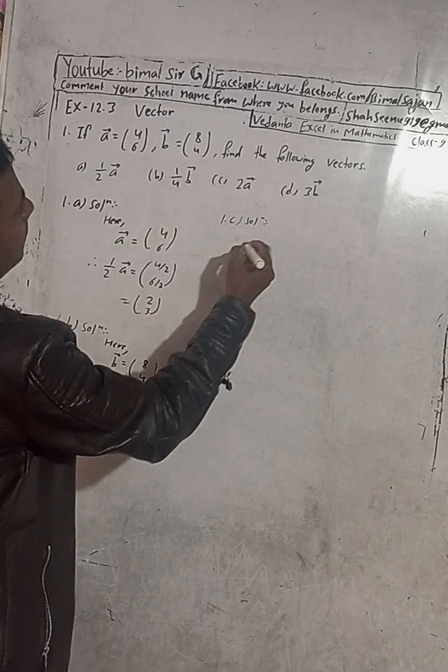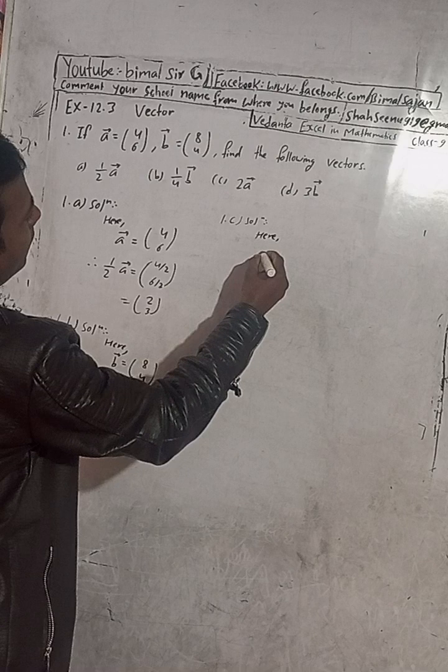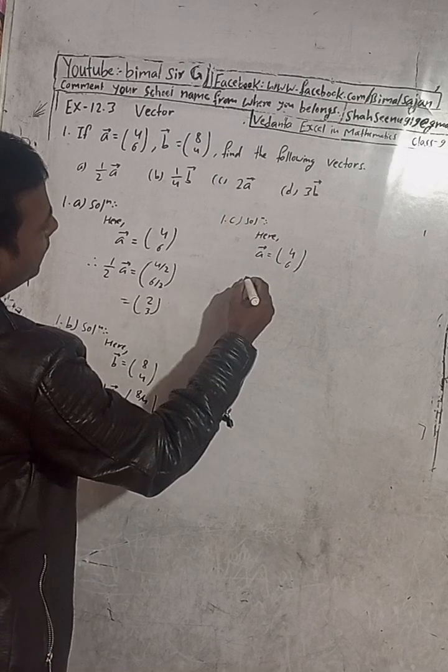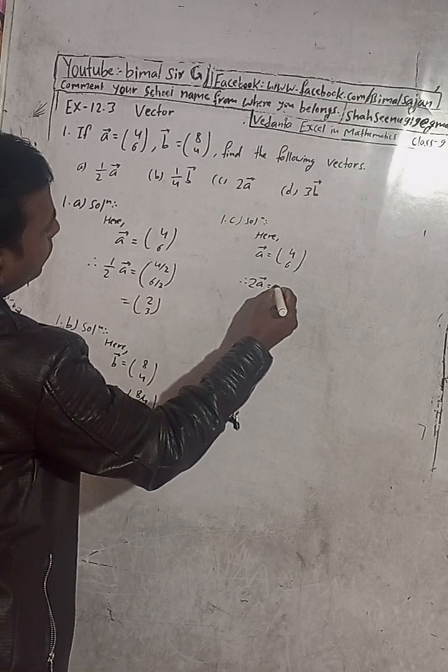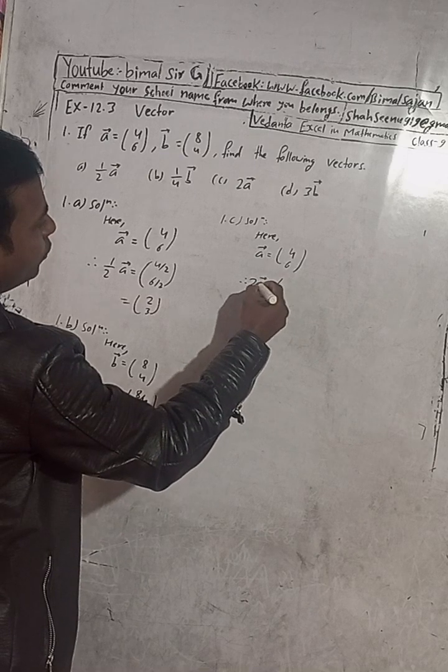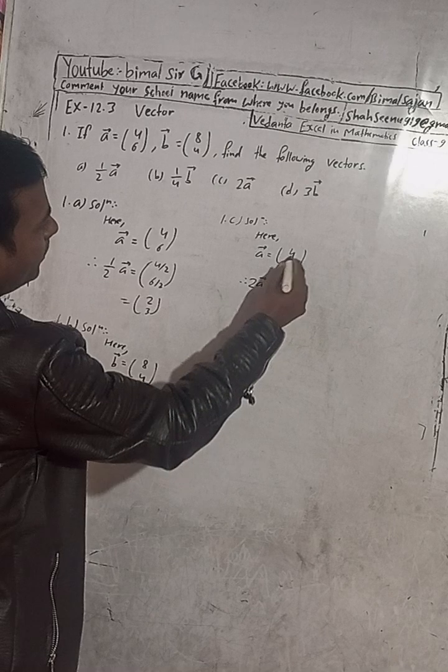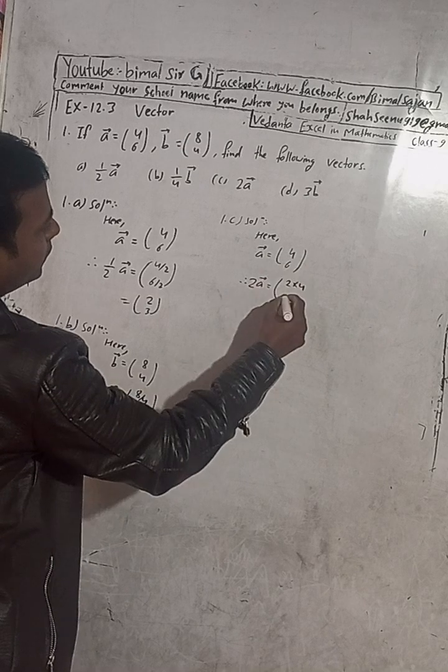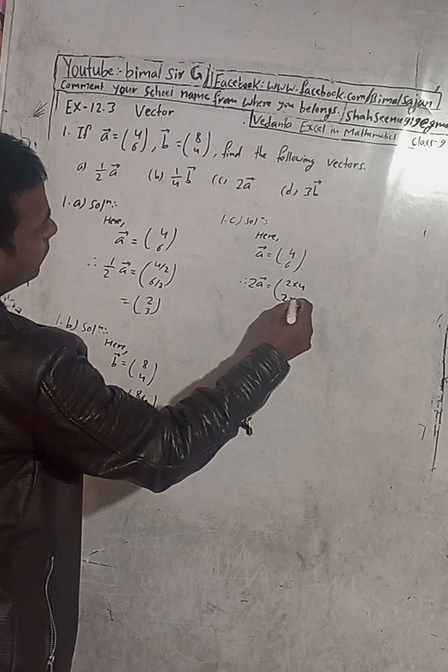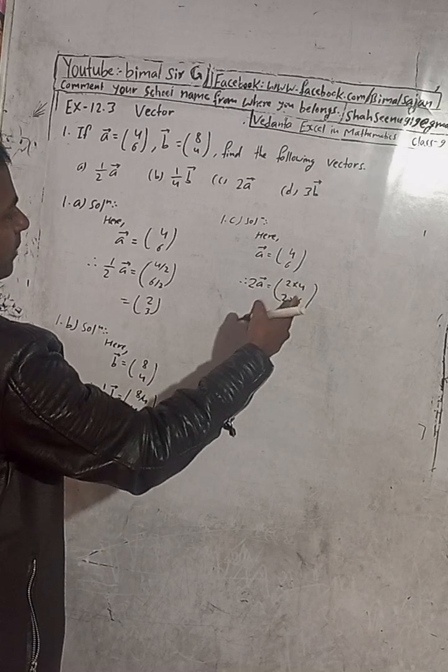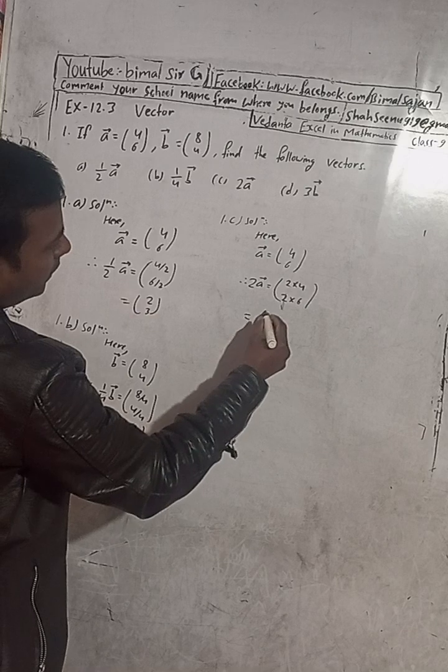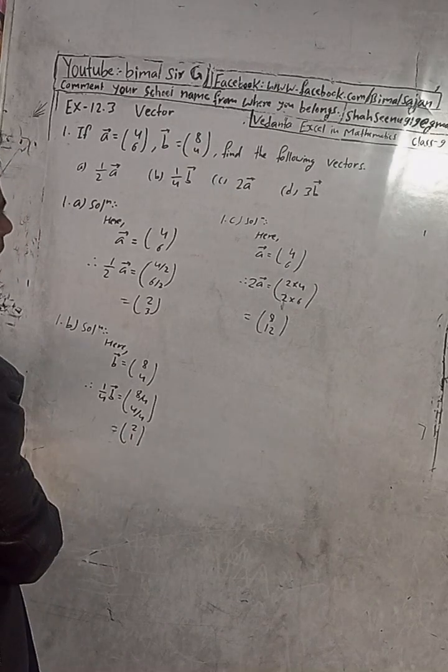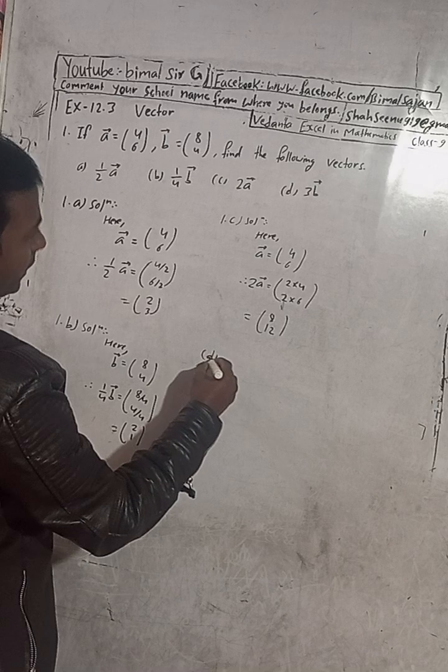In the same way, now here c number solution. We have to find 2a vector. Here a vector is equal to (4, 6), and we have to find 2a vector. Therefore 2a vector is equal to, this is 2, so you have to multiply, that means two into four and two into six. This is equal to 8 and this is 12. So this is the answer.